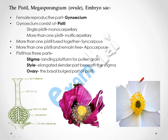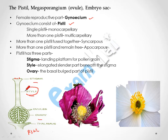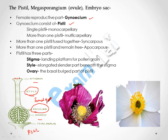The female reproductive part is the gynoecium, and gynoecium consists of the pistil. This is the diagram of a pistil. The pistil has three parts: stigma, style, and ovary. The stigma is the landing platform for pollen — after pollination, when the transfer of pollen takes place, pollen is deposited on the stigma. Beneath the stigma is the elongated cylinder part called the style, and beneath the style is the basal bulged part called the ovary. The ovary consists of ovules, which contain the female gametophyte.